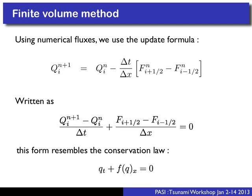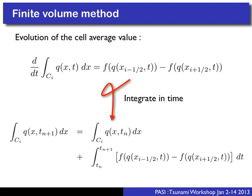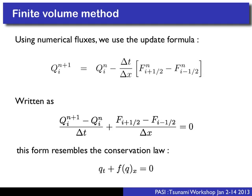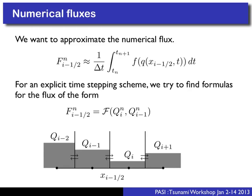Integrating in time, we can write down an exact expression: the average value at time level n+1 equals the average value at time level n, plus the time-average of the difference of fluxes. This piece is what we need to figure out how to compute — that's the heart of a finite volume scheme. If we can compute numerical fluxes, which are these time-average values of the flux at each edge, we can write down a standard finite volume scheme.